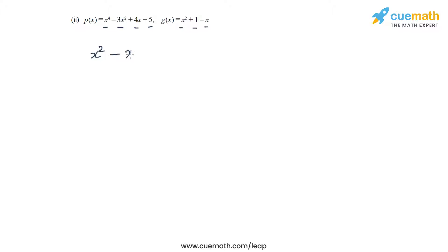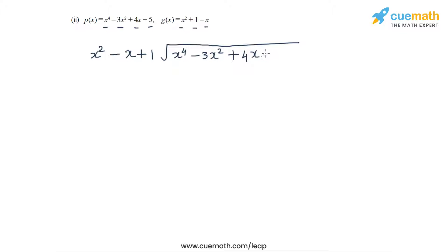In Part 2, the dividend polynomial is x⁴ - 3x² + 4x + 5 — there is no cubic term. The divisor polynomial is x² + 1 - x, which we write in order as x² - x + 1. Then the dividend is x⁴ - 3x² + 4x + 5.